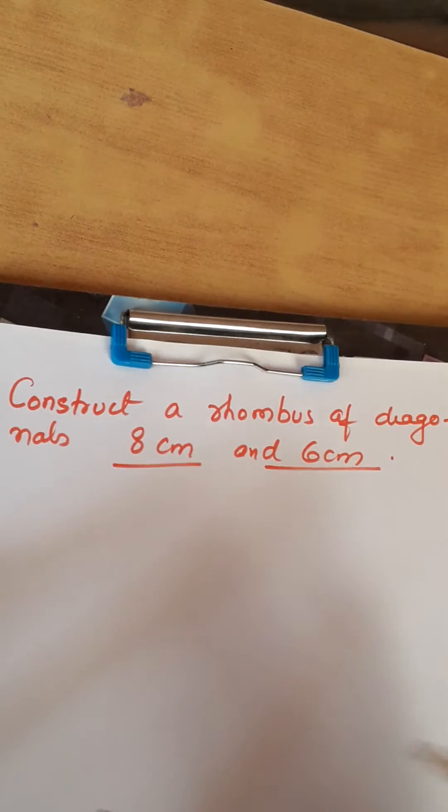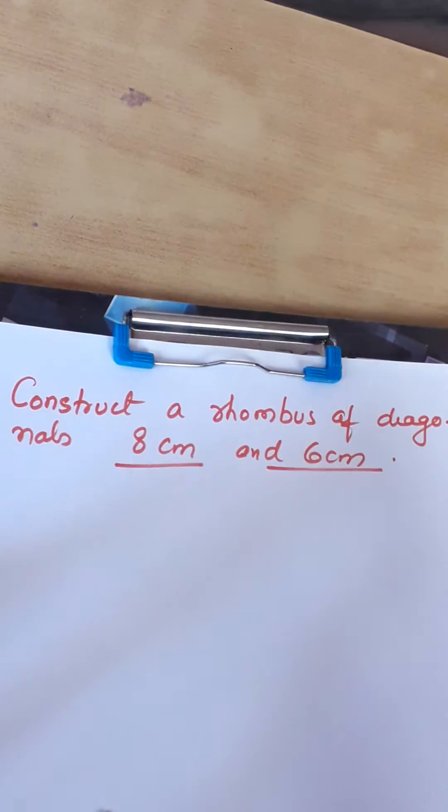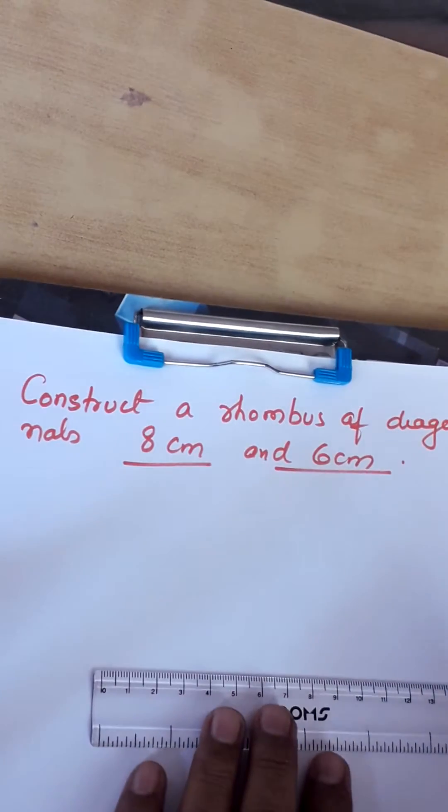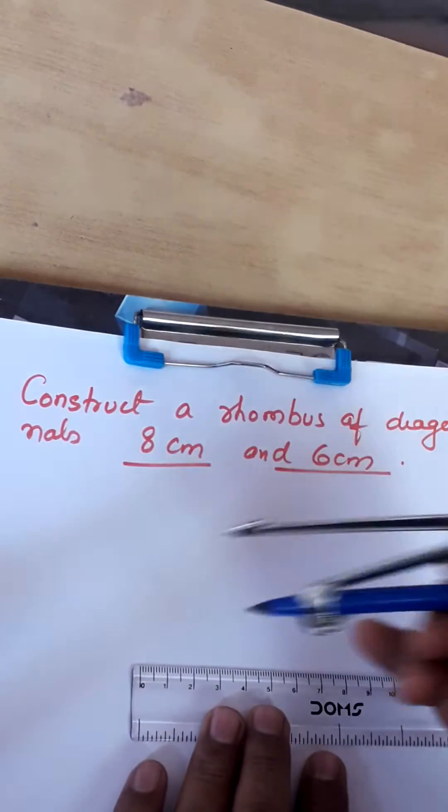In this question we have to construct a rhombus of diagonals 8 centimeter and 6 centimeter. First we will take a line segment of 8 or 6 centimeter.